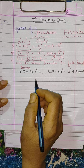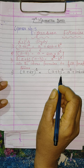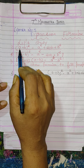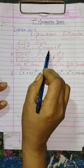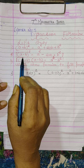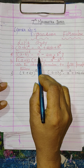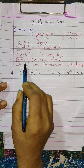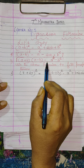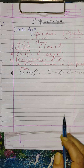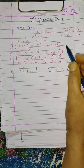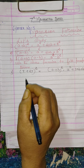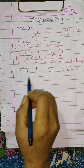Today we will start lesson number 5, that is expansion formulas. In your 7th standard, you already studied these formulas. First formula: (a+b)² = a² + 2ab + b². Second formula: (a-b)² = a² - 2ab + b². Third formula: (a+b)(a-b) = a² - b². You studied these formulas last year. Now we will use these formulas to solve some questions.